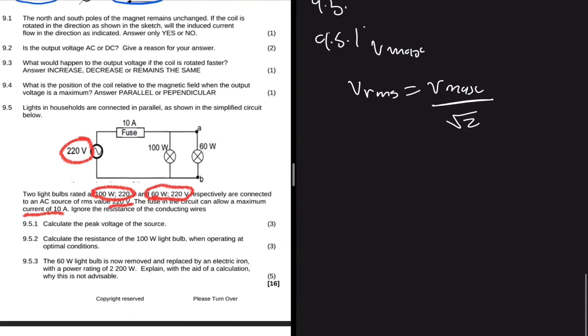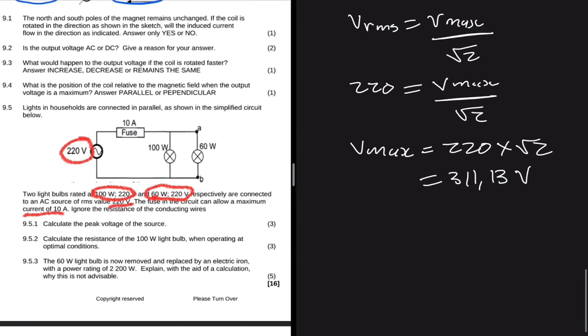So we're going to have V_rms equals to V_max divided by square root of 2. So what is our V_rms? Our V_rms is 220, which equals V_max divided by square root of 2. So our V_max will be equal to 220 multiplied by the square root of 2. So if you do that I'm getting 311.13 volts. I hope you're getting the same thing.